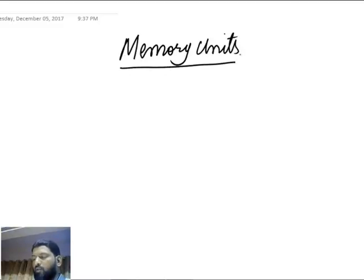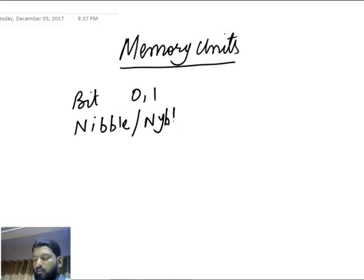Now these are the memory units and how to calculate the size of these different memories. First of all, I'm writing the table here. The smallest one is a bit, which could be either zero or one. Then you have a nibble, which equals 4 bits. Then you have a byte, which equals 8 bits.